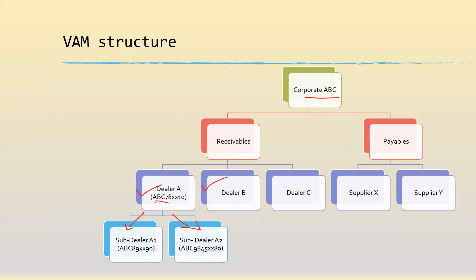These are the virtual accounts, and they are backed by a real account — let's say the real account is 1234. Now let's assume that an incoming payment happens for sub-dealer A1, which is to virtual account ABC89XX90. So an incoming EFT transaction comes to sub-dealer A1. How will the transaction flow happen?